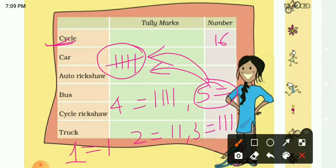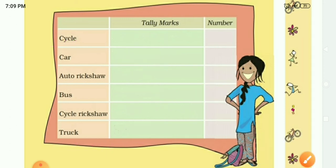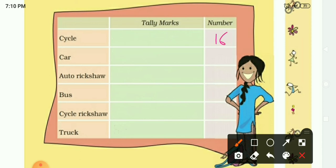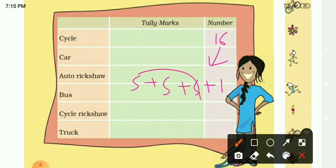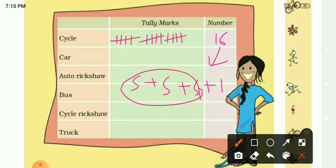Let's make 16 tally marks using this method. 16 can be divided as 5 plus 5 plus 5 plus 1. So make three bundles of five — each bundle has four vertical lines with a cross — and then one single line. Three fives is 15 plus 1 is 16. That is how you represent 16.